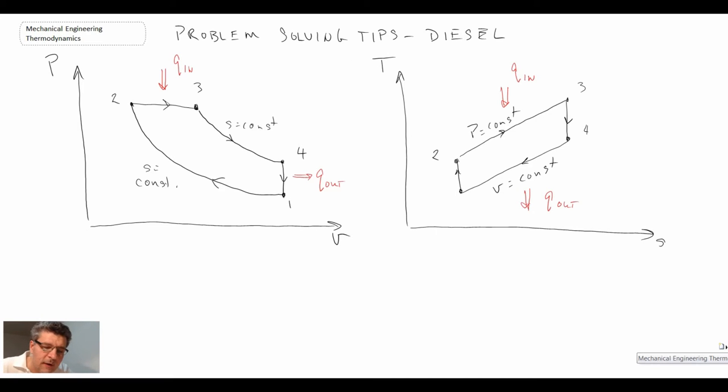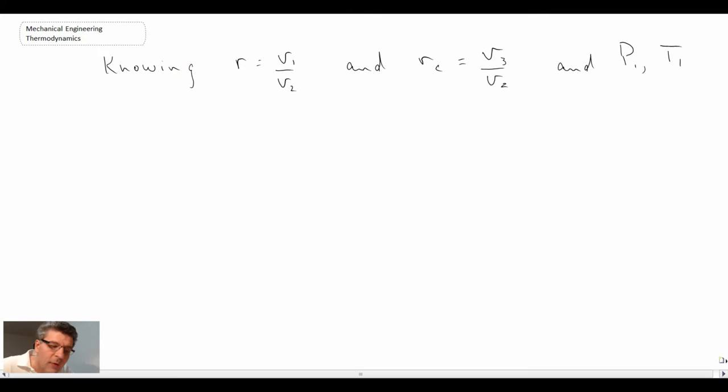Now if we look back at our process diagrams, the thing to note is 1 through 2, and then also 3 through 4. These are isentropic processes, 1 through 2 and then again 3 through 4. So we can take advantage of that when we're solving problems.